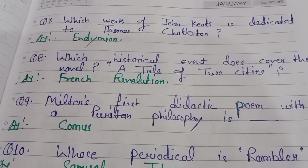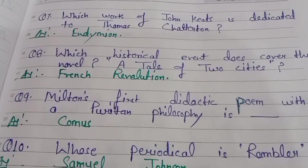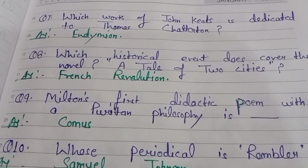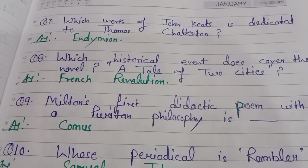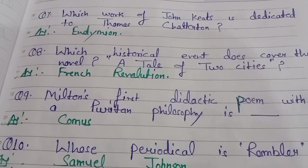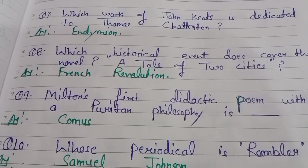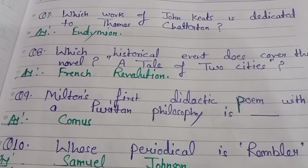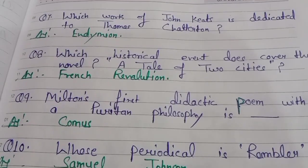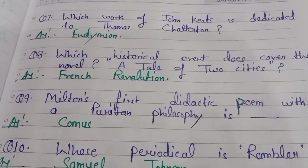Which work of John Keats is dedicated to Thomas Chatterton? John Keats dedicated his work Endymion to Thomas Chatterton. Endymion is among the most famous works of John Keats, and it has been dedicated to Thomas Chatterton.